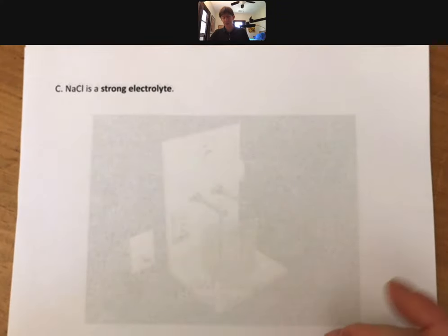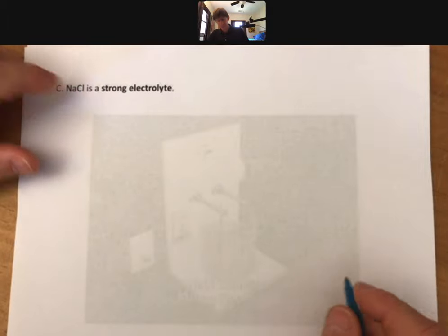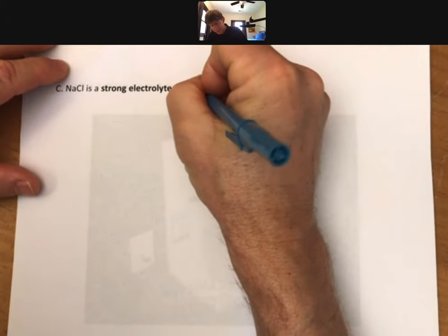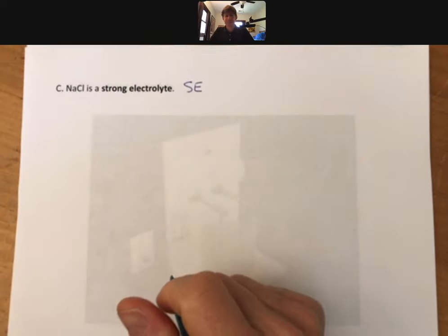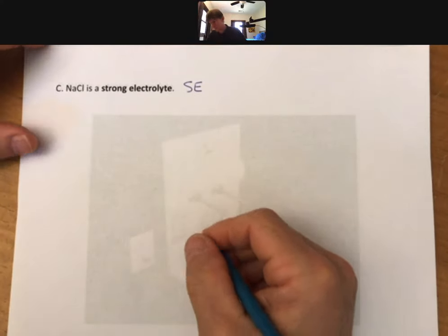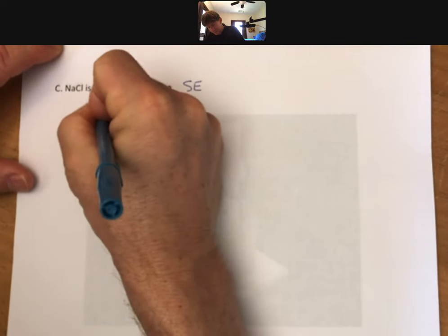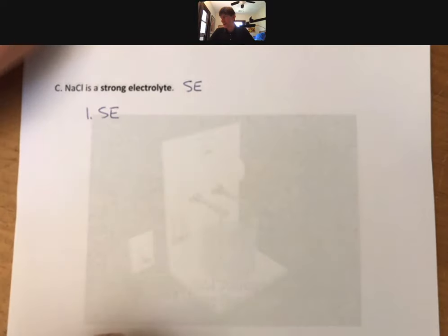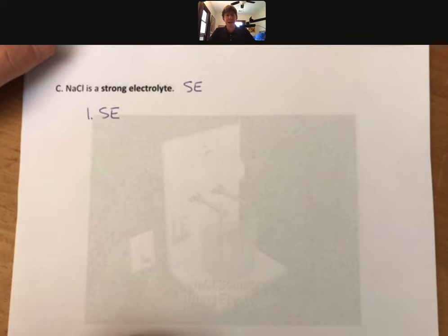Now, sodium chloride is what's called a strong electrolyte. My symbol for that is SE. Now let's talk about what a strong electrolyte is. A strong electrolyte dissolves in water and breaks up 100% into ions.